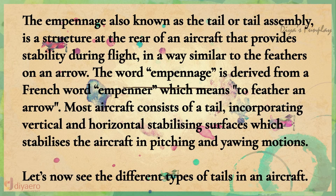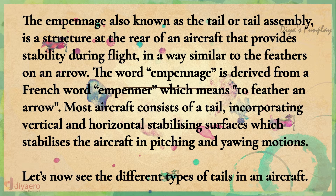The empennage, also known as the tail or tail assembly, is a structure at the rear of an aircraft that provides stability during flight, in a way similar to the feathers on an arrow. The word empennage is derived from a French word which means to feather an arrow.